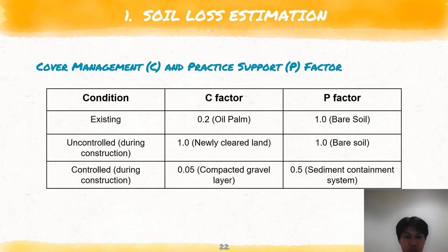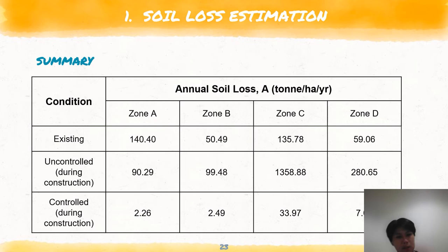The cover management factor C and support practice factor P are determined based on the tables given in the MASMA guidelines. In the existing condition, C factor is 0.2 as the site is an oil palm plantation, while the P factor equals 1 as it is bare soil. In uncontrolled condition, the C factor is 1 as it is newly cleared land and P factor is also 1. For the controlled condition, the C factor is 0.05 and P factor is 0.5. This table shows the annual soil loss in tonnes per hectare per year for each condition and zone. In the controlled condition, the annual soil loss is reduced for each zone after BMPs have been implemented.